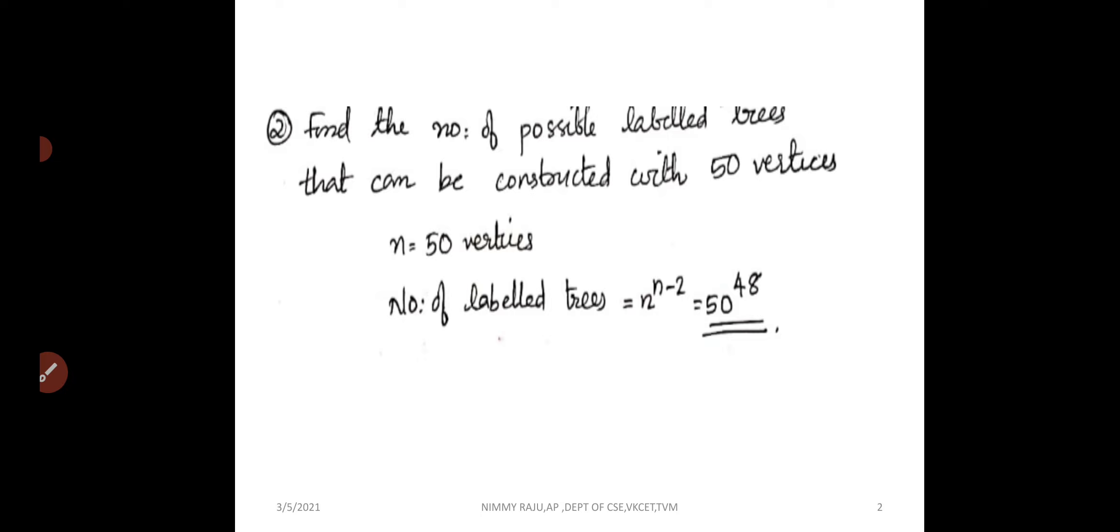To find the number of labeled vertices, the formula is n raise to n minus 2. So that is equal to 50 raise to 50 minus 2, that is 50 raise to 48.